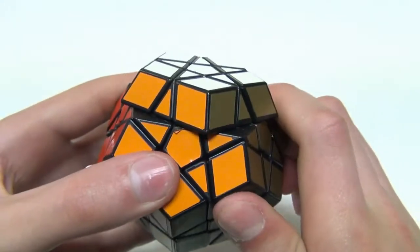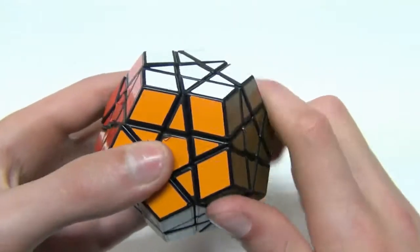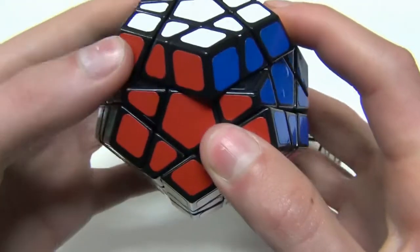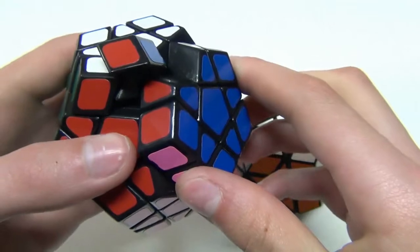Even the corner cutting, you can really see it just corner cuts amazingly well considering it's the first mass-produced Megaminx. Corner cuts very well. In fact, it actually does it better than the MF-8. As you can see.